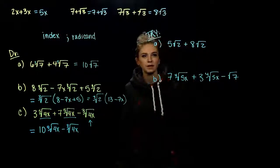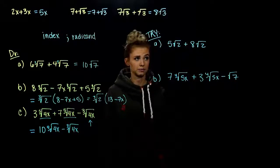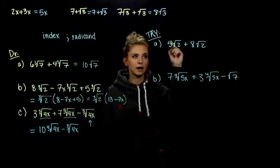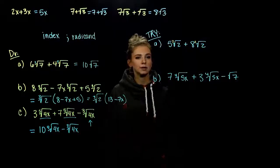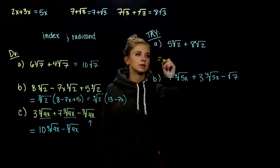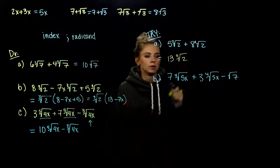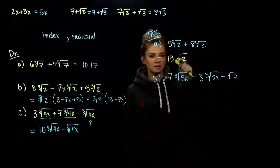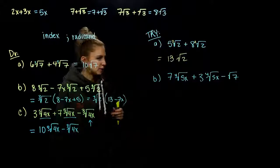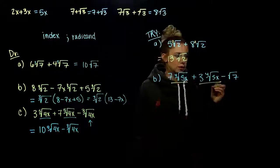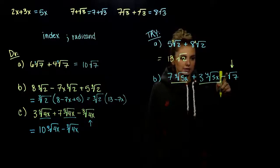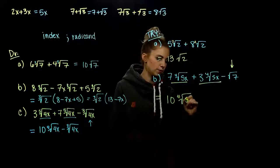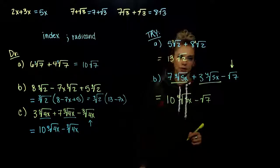Quick examples to simplify. Part A: square root 2 and square root 2 — same index (index 2 if not written), same radicand. They match exactly, so 8 and 5 together gives us 13 root 2. Part B: we have two like terms and an oddball on the end that doesn't have the same index or radicand. So we get 10 factors of the fourth root of 5x, and we're subtracting root 7 off the back.